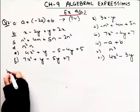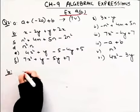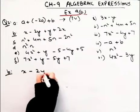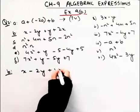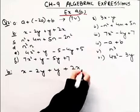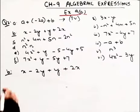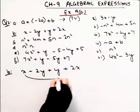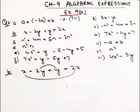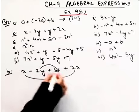Now coming to the B part. B is: x – 2y + y + x. Here we will add the like terms together — like with like.